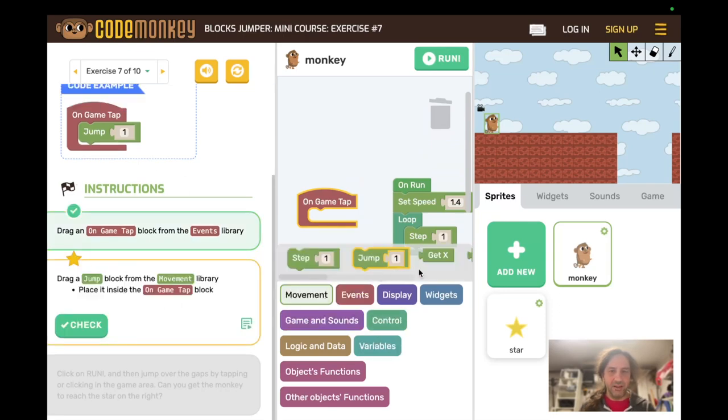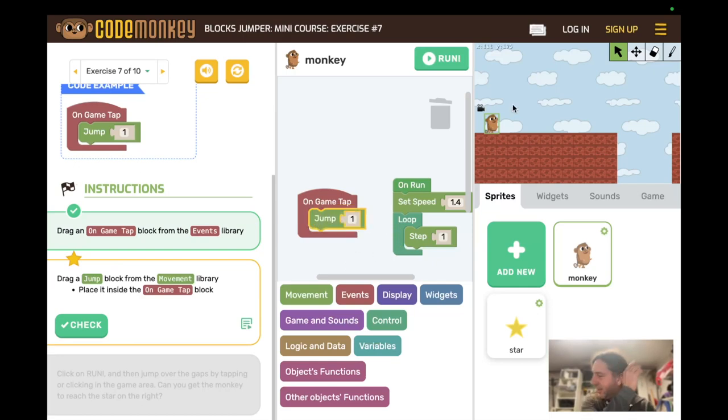Drag a jump block from the movement library. One other note that I should have said much earlier. If the students are playing around and just adding a bunch of sprites, that is going to confuse the instructions. And it won't know which monkey to use or which star. And it probably won't let you continue through. So if they've done that, better to just reload the page and allow them to start from the beginning of the exercise that they're on. Reloading will start at whichever number exercise they were on. Jump from the movement library inside on game tap.